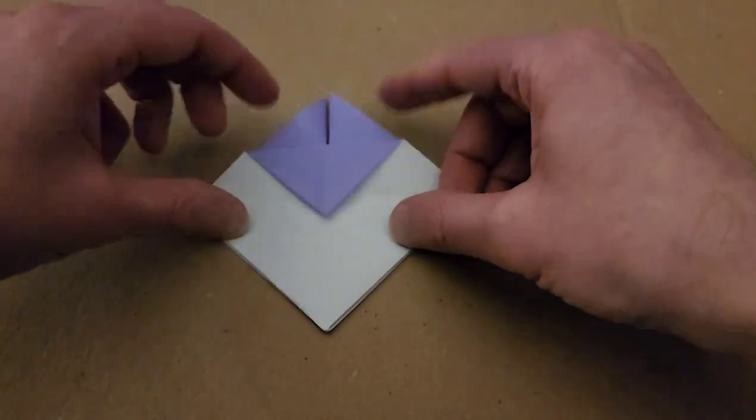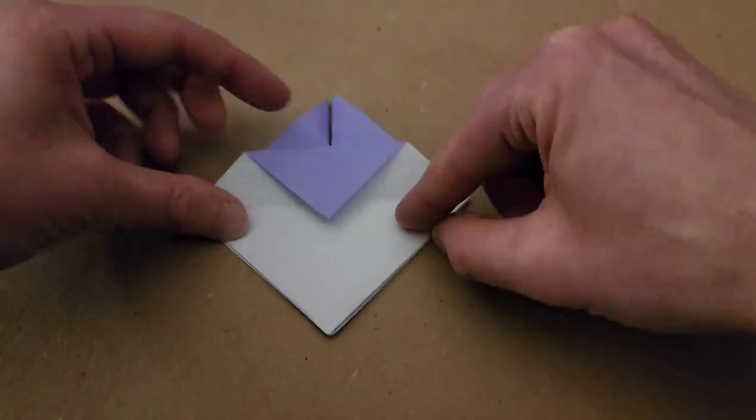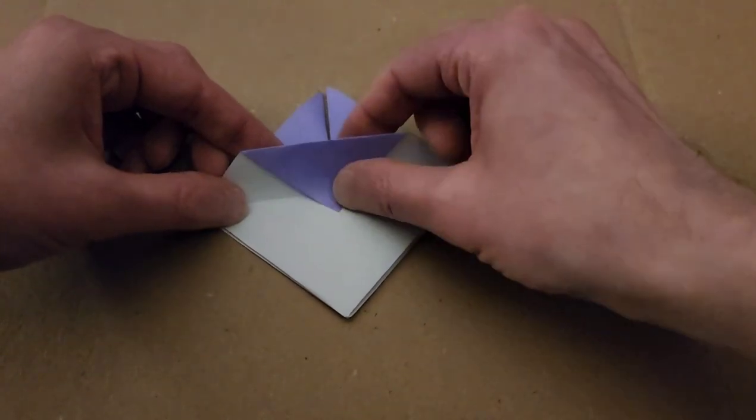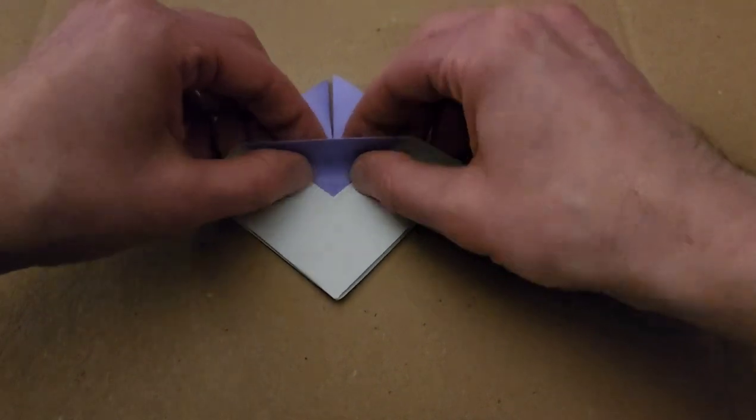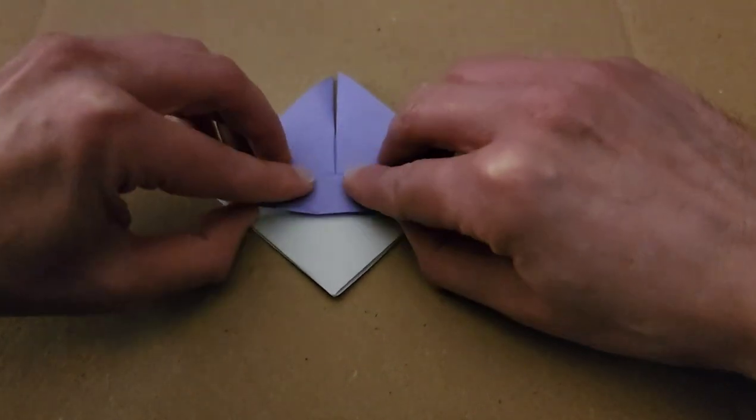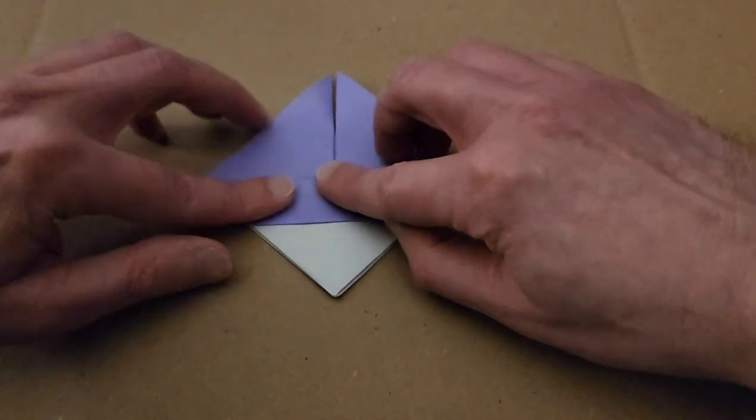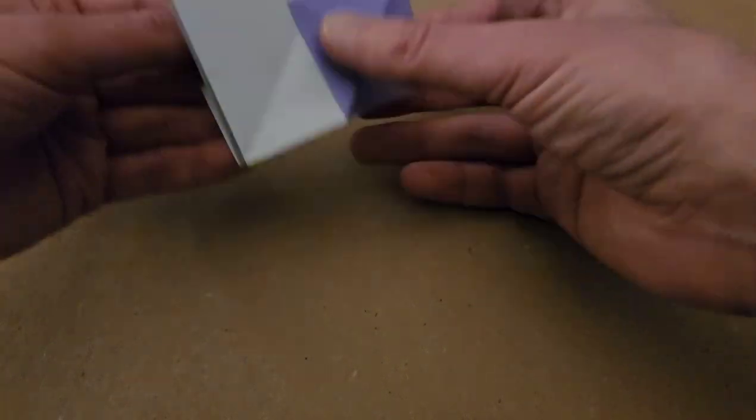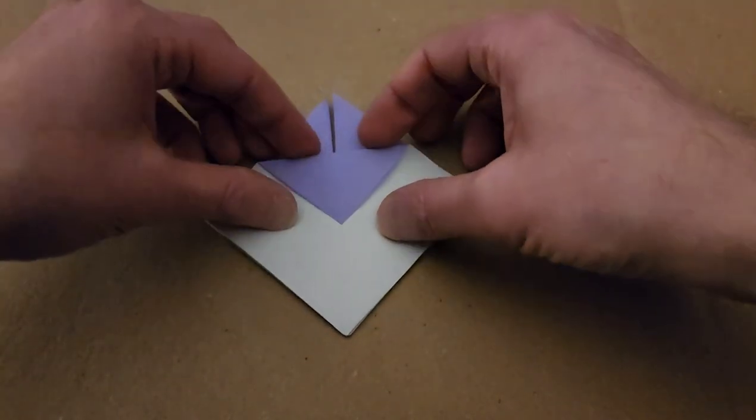At this point, fold this edge down along the crease that we already made, sort of scooching in that tip as you go. There. Like that. And then turn your piece over and do the exact same thing.